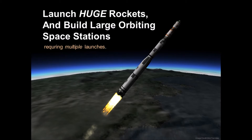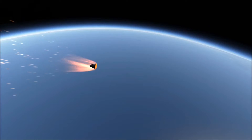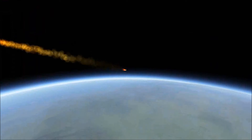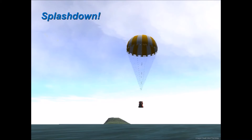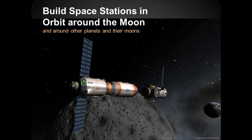You can build gigantic rockets and launch them into space, and you can build space stations and link them using orbital rendezvous and docking procedures. You can perform science at your space station, re-enter, and bring them back home. Re-entry is a lot of fun. You can build those space stations around the moon or other planets or their moons. And you can launch space telescopes — this one looks suspiciously like the James Webb Space Telescope, which NASA will be launching very soon, and it's included in a mod for the game.